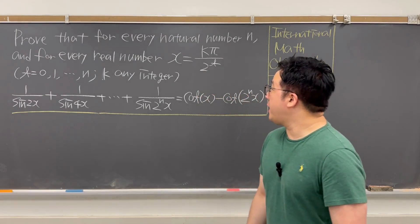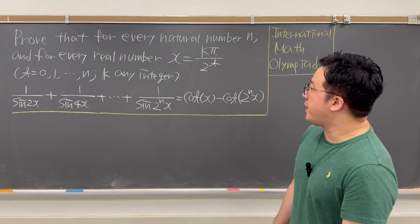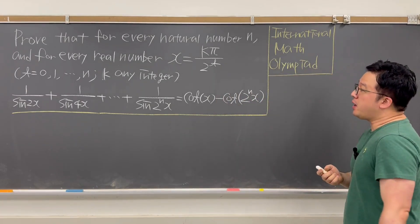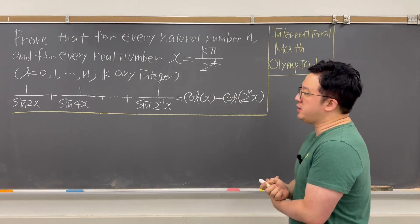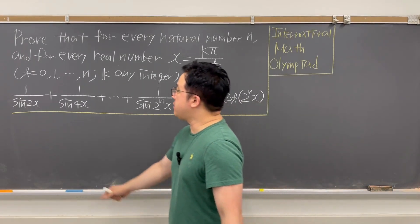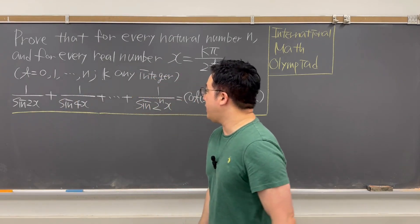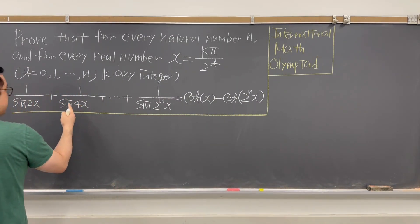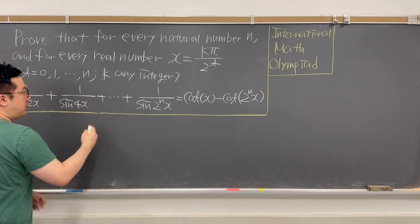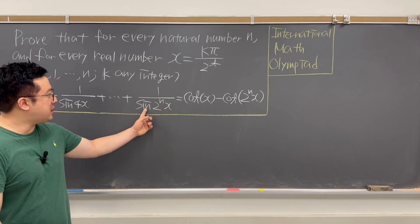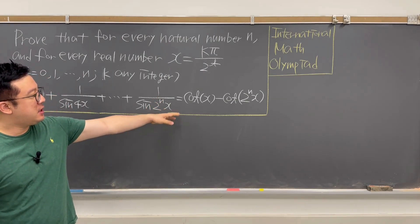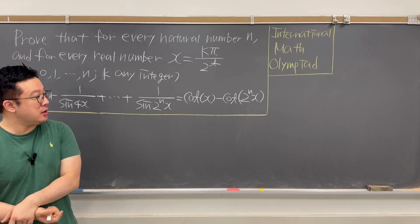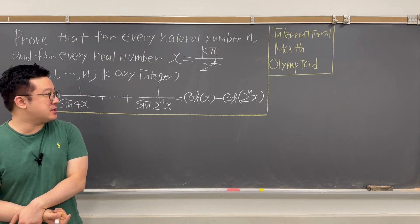The question is: prove that for every natural number n, and for every real number x not equal to k·π over 2^t, where t is 0, 1, all the way up to n, and k any integer, we have 1 over sin(2x) plus 1 over sin(4x) plus all the way up to 1 over sin(2^n · x) equals cotangent x minus cotangent(2^n · x).